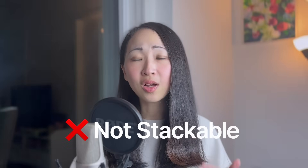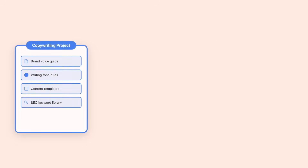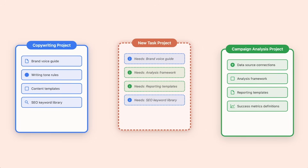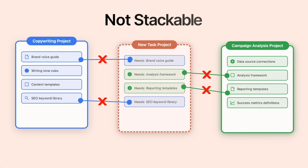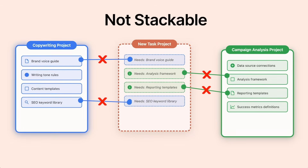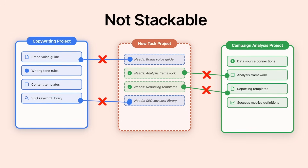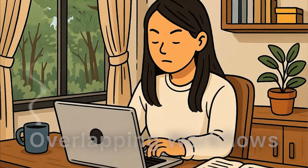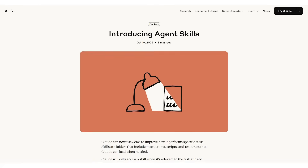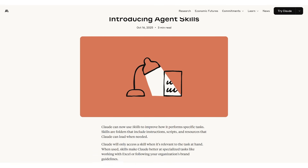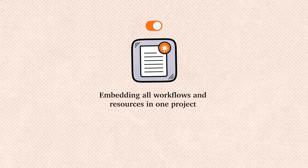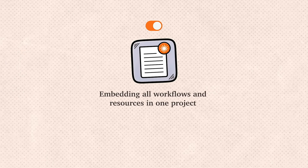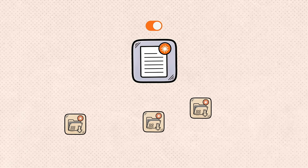Second, it's not stackable. Imagine you have a specialized project for copywriting and another project for campaign analysis — you can't just combine them together for a new task. They operate in complete isolation, so you end up having to build so many different projects, which might have overlapping workflows. And that's why the solution is Claude Skills.